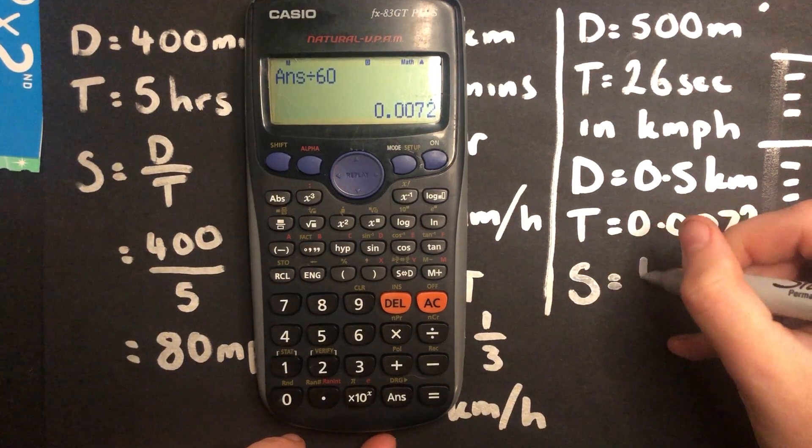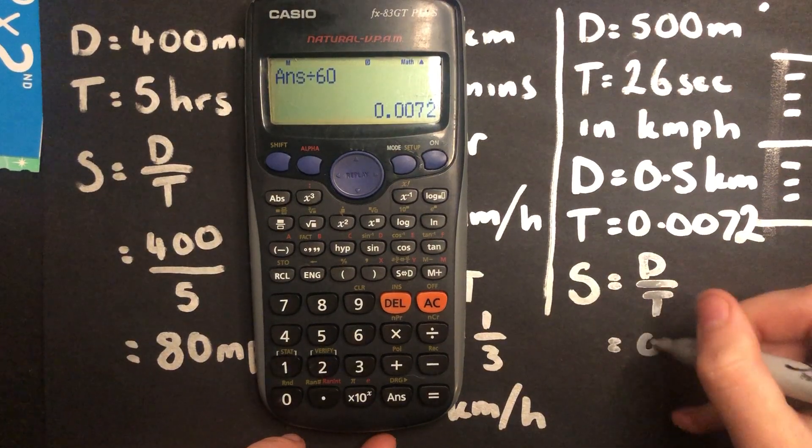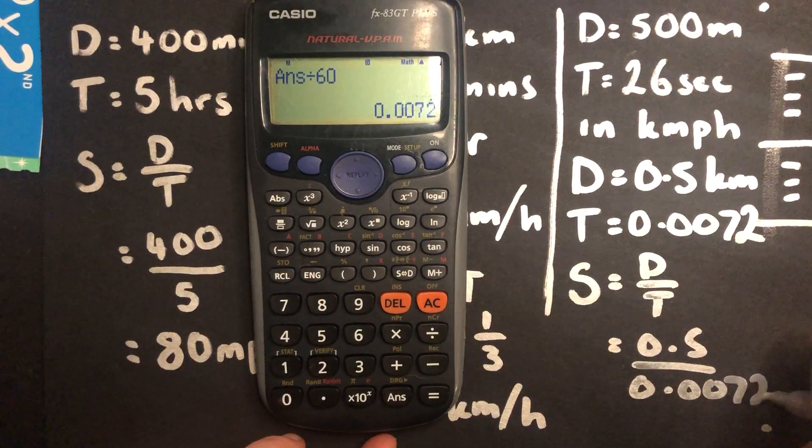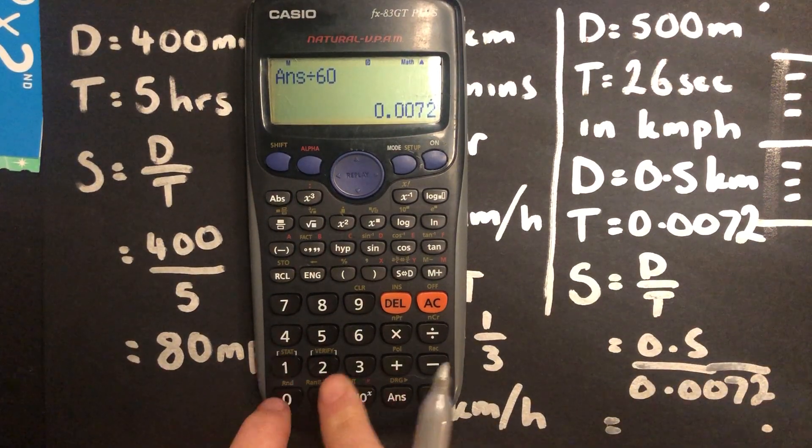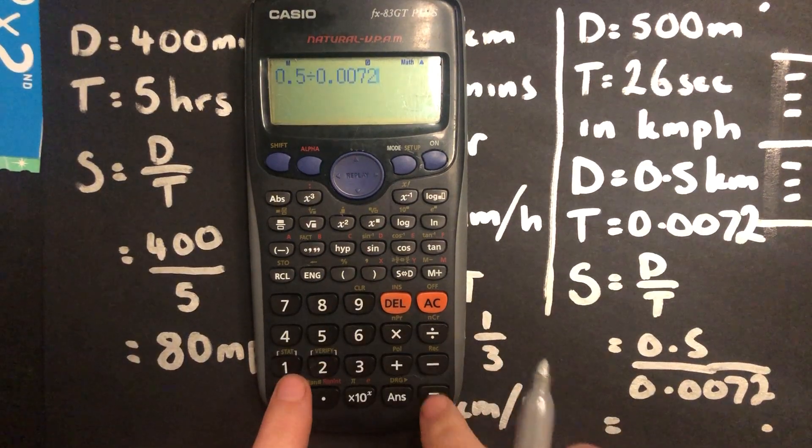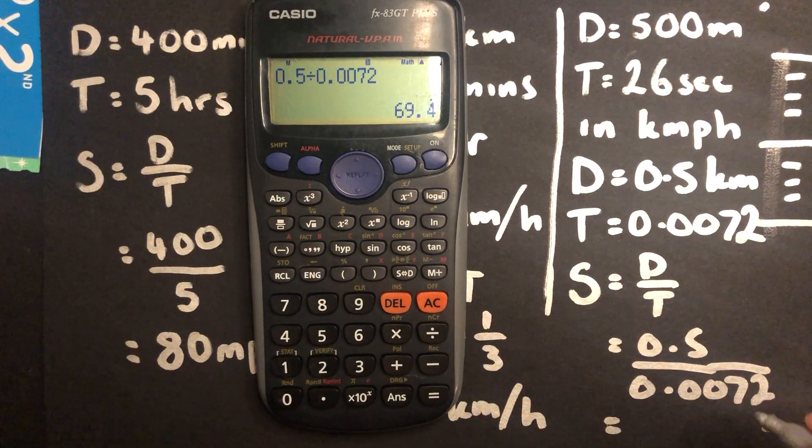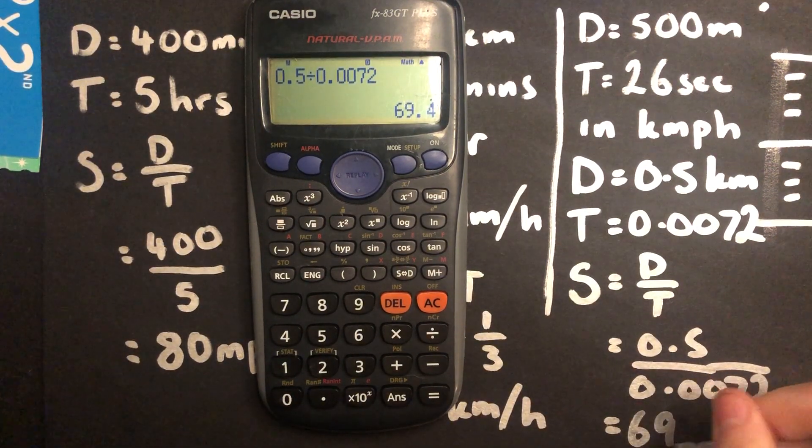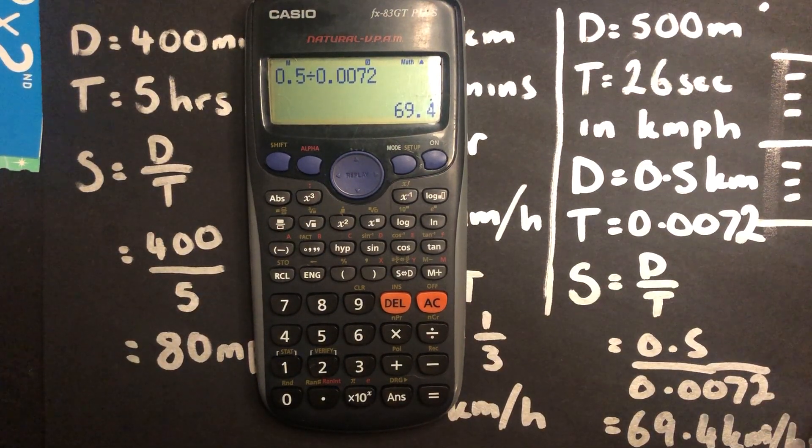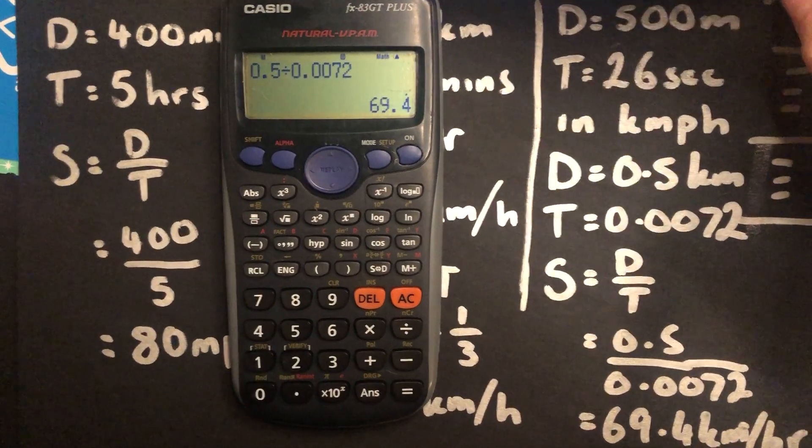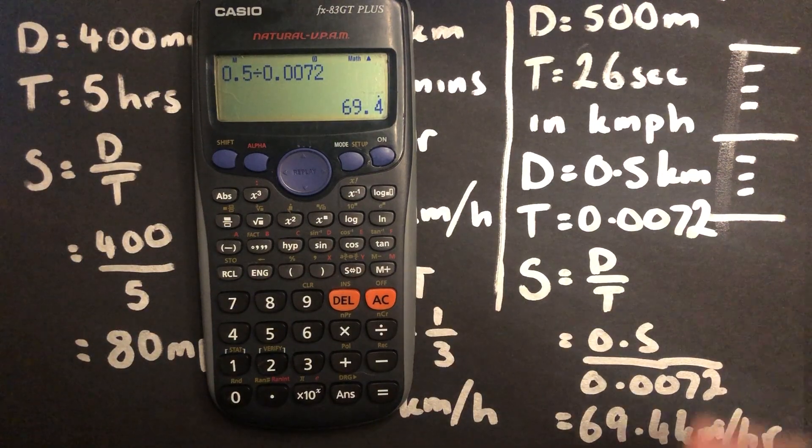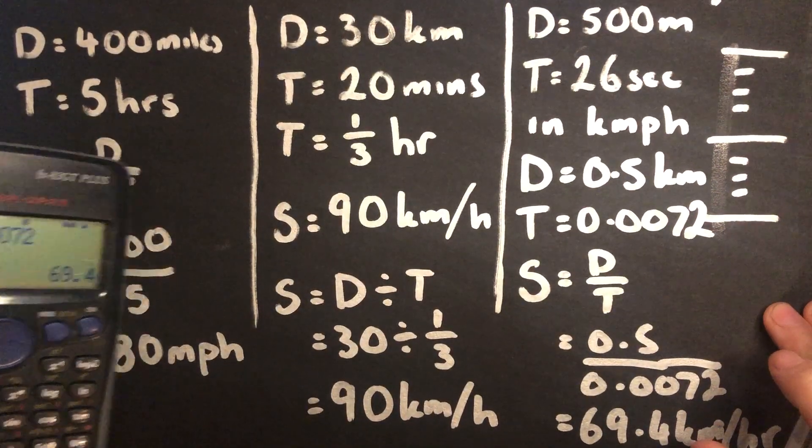So finally, the calculation is speed is equal to distance over time. My distance is 0.5. My time is 0.0072. Get that into the calculator. 0.5 divided by 0.0072. And my answer, ooh, look at that. 69.4 kilometres per hour. If that was a car on a motorway or on a dual carriageway, it's very close to the limit, but it is not speeding. And that is the calculation that a speed camera would do.